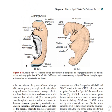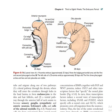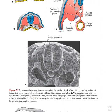You can see the anterior neuropore closing and the pharyngeal arches with somites at day 25. The yolk sac is a very important structure that provides nutrition to the embryo. Before the villi take contact with the maternal cells — in the first and second week — cells derive their nutrition mostly from the yolk sac.